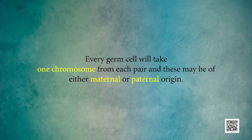Each cell will have two copies of each chromosome, one each from the male and female parents. Every germ cell will take one chromosome from each pair, and these may be of either maternal or paternal origin. When two germ cells combine, they restore the normal number of chromosomes in the progeny, ensuring the stability of the DNA of the species. Such a mechanism of inheritance explains the results of Mendel's experiments and is used by all sexually reproducing organisms, though asexually reproducing organisms also follow similar rules of inheritance.